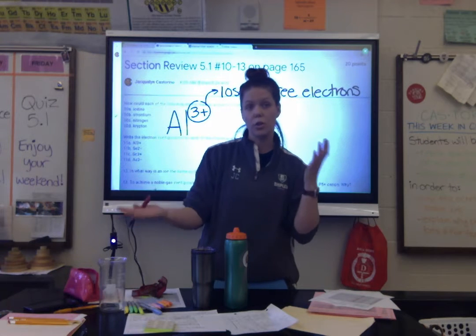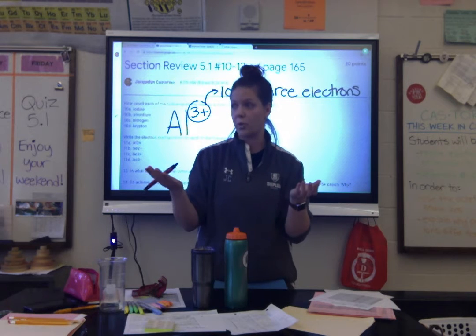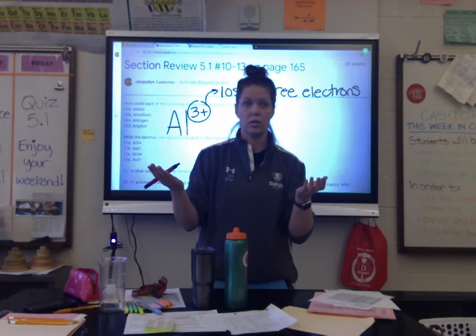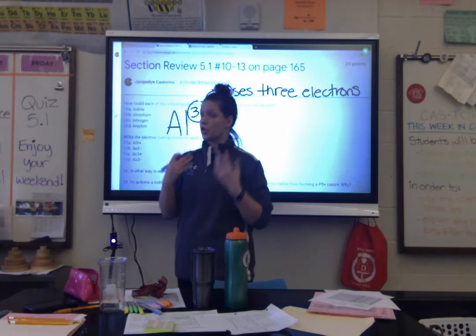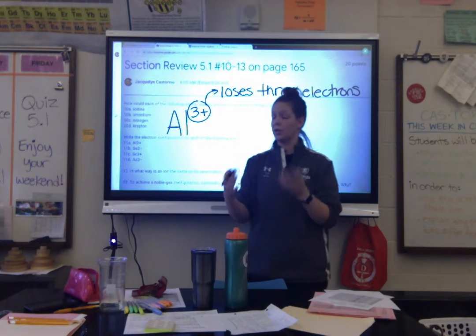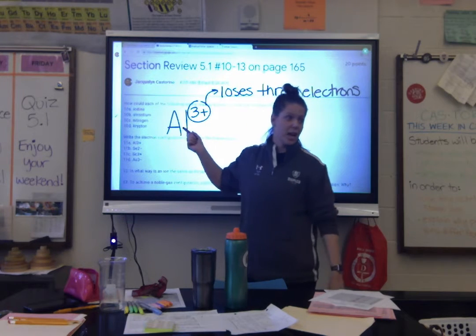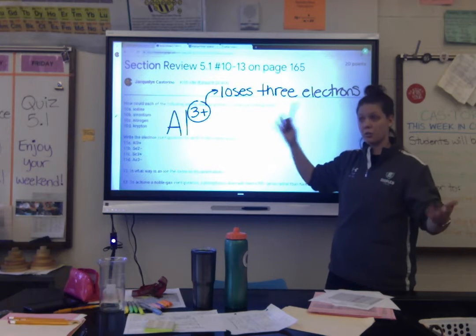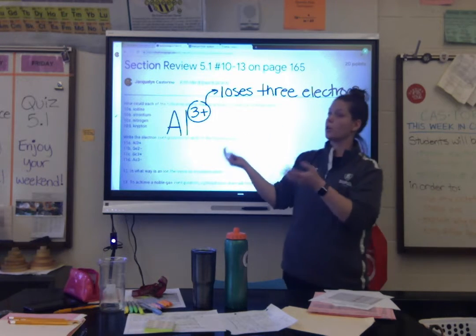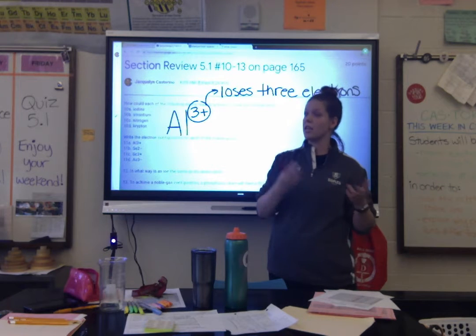Now, refresher on electron configuration — you should be pros after all the practice. We always start in the top left corner. So we write 1s², then 2s², and there's nothing else in the first period so we go to the second period: 2s², then 2p6. The p block has 6 columns so the number is 6. And that gets us to neon — that's the electron configuration for 11A, aluminum 3 positive.